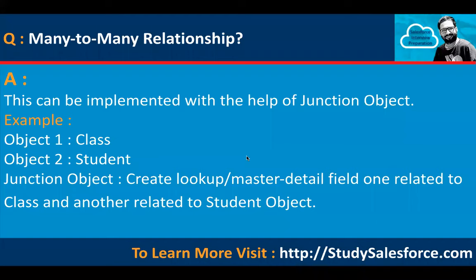To elaborate: we have two objects — Class and Student. One class can have many students, and one student can have many classes. To build this relationship, you create a junction object that has lookup or master-detail fields associated with both Class and Student.